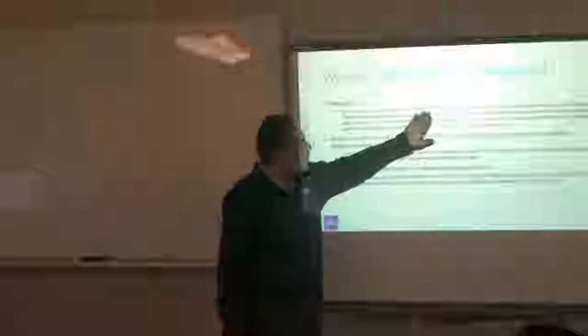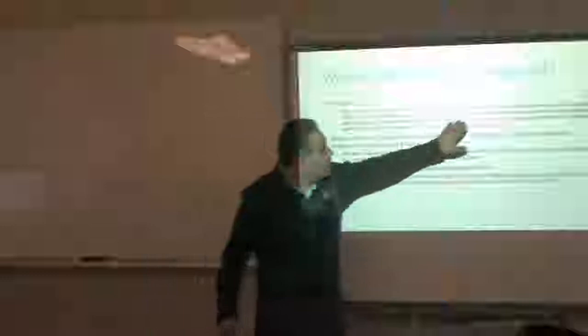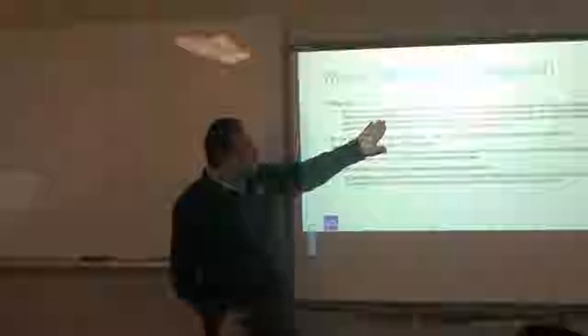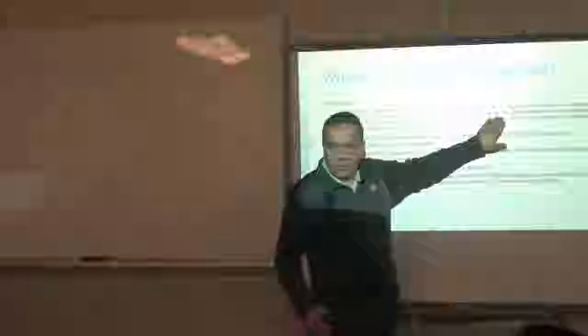Let's start with the Wikipedia definition. The Internet of Things is a network of physical objects — any physical objects, which we now call 'things' — embedded with electronics, software, sensors, and connectivity to enable greater value by exchanging data with the manufacturer, operator, or anything else. Each thing is uniquely identified through its embedded computing system.